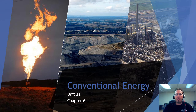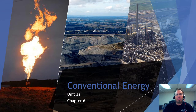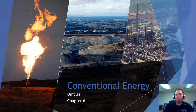We're going to start Chapter 6, which is Unit 3A: Conventional Energy. We'll break Chapter 6 into two parts — conventional energy and then Unit 3B, which will be about alternative energy sources. Three pictures represent the main topics: natural gas burning on the left, a big coal mine in the middle, and a petroleum distillation plant on the right.